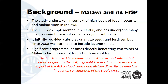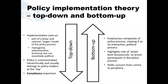The research is undertaken in the context of a high level of food insecurity and malnutrition in Malawi. The FISP was originally implemented in 2005-06. It provides subsidies on improved maize seed and maize fertiliser, and since 2008 has included legume seeds.